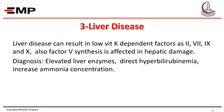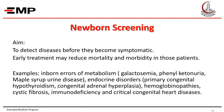Newborn screening aims to detect diseases before they become symptomatic so that early treatment may reduce mortality and morbidity. Examples of diseases screened in some countries include inborn errors of metabolism such as galactosemia, phenylketonuria, and maple syrup urine disease; endocrine disorders such as primary congenital hypothyroidism and congenital adrenal hyperplasia; hemoglobinopathies, cystic fibrosis, immune deficiency, and critical congenital heart diseases.